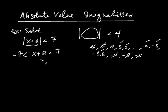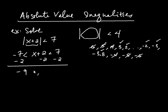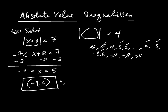We're going to subtract 2 from every side. That leaves us with negative 9 is less than x, which is less than 5. That means our solution set is negative 9 to 5, and that would be our answer. The key was realizing that whatever is between the absolute value symbols has to be not only less than 7, but also greater than negative 7 — it's got to be between negative 7 and 7.